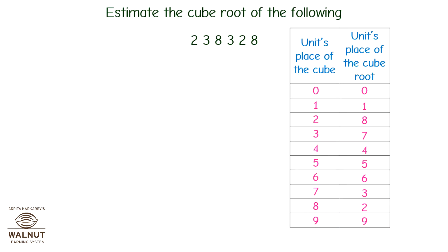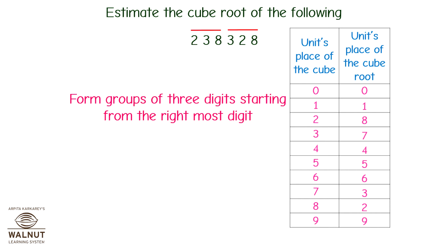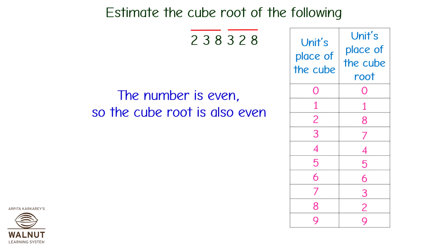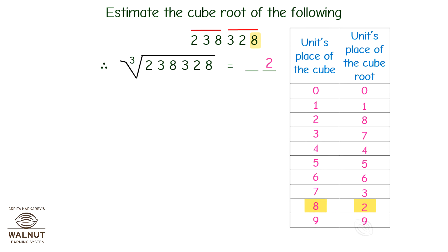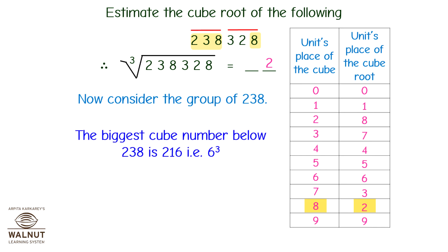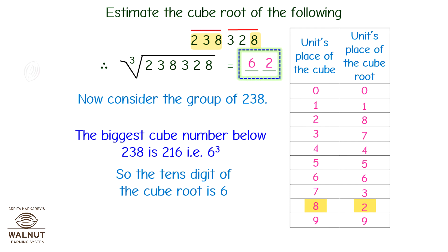Estimate the cube root of 2,38,328. Form groups of three digits starting from the rightmost digit. The number is even, so the cube root is also even. 8 is in the unit's place of the cube, so the unit's digit of the cube root is 2. Therefore, the cube root of 2,38,328 is _2. Now consider the group of 238. The biggest cube number below 238 is 216, i.e., 6 cubed. So the tens digit of the cube root is 6. Therefore, the cube root of the given number is 62.